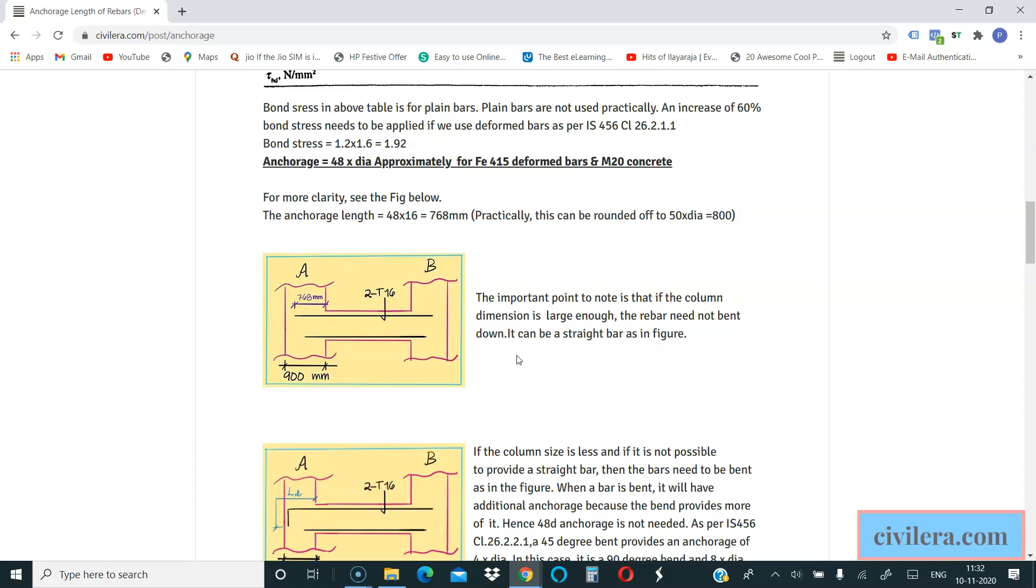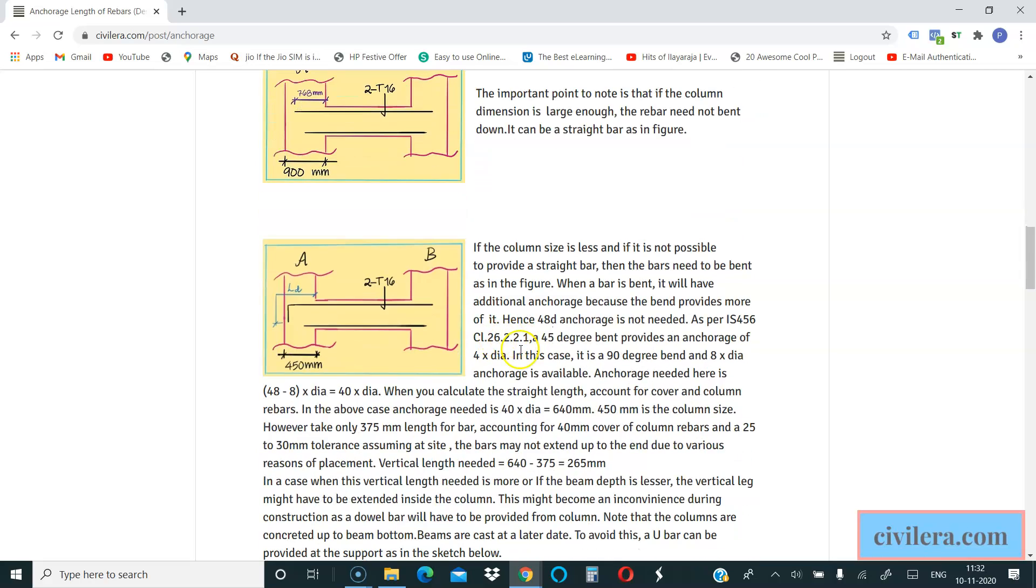But many times in medium size buildings, your column sizes are say 200 by 450, 300 by 600, that range, in which case you will have to bend your rebars. And when you bend your rebars, then only you can achieve your development length, the required development length. Now one more point, when you bend down because of the bent, you get a bit more anchorage.